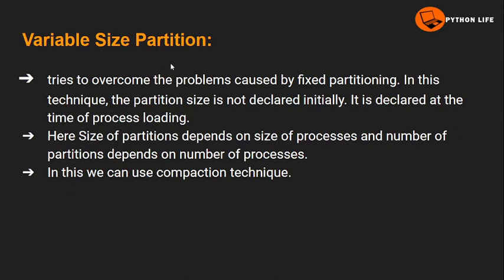The number of partitions depends on the number of processes. For example, if there are 5 processes, we have 5 partitions. The second point is the size of partitions — the size of partitions depends on the size of the processes. For example, if the size of a process is 50MB, the partition size will also be 50MB.